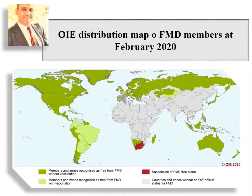This OIE map shows foot-and-mouth disease member status as of February 2020. Countries shown in grey have no official OIE status regarding FMD. Light green countries are members and zones recognized as free from FMD without vaccination, while another shade of green indicates members and zones recognized as free from FMD with vaccination.